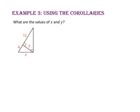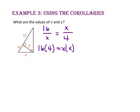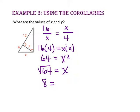In example 3, we will use the corollaries to find the values of X and Y. Since X is a leg, we know it is the geometric mean of the entire hypotenuse, 4 plus 12 or 16, and the segment of the hypotenuse adjacent to leg X, which is 4. Using cross products: 16 times 4 equals X squared, so 64 equals X squared. Taking the square root of both sides, X equals 8.